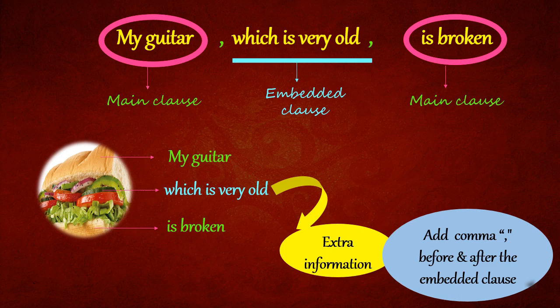If you're going to read the main clause, we have already said that it will make complete sense. Here, when you read it as my guitar is broken, the sentence is complete. It has a subject, it has a verb, and it does give a complete thought. Whereas, which is very old does not give a complete thought.